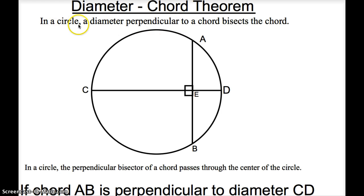In a circle, a diameter perpendicular to a chord bisects the chord. That's what our theorem is. A diameter perpendicular to a chord bisects the chord. Now, let's look at this word right here, bisect. What's that mean again? That's right, to cut in half. So let's take a look at a visual.